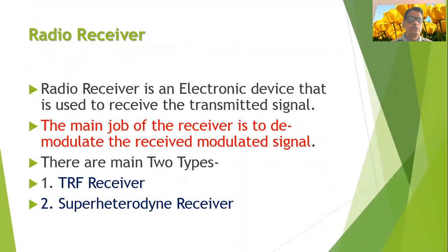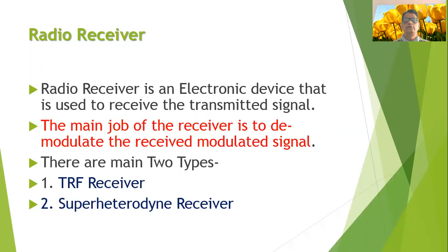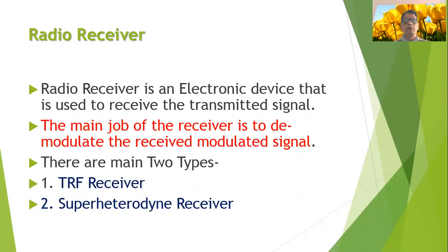A radio receiver is an electronic device and normally it is used to receive the electronic signal that is transmitted in the air. You will find that the receiver is frequently used by us in our daily lives. For example, when you observe any television program on a television screen, then it is basically a television receiver. If you hear any song on a radio, then that radio itself is a radio receiver. So a radio receiver receives the signal from the air and the main function performed by the radio receiver is to demodulate the signal.